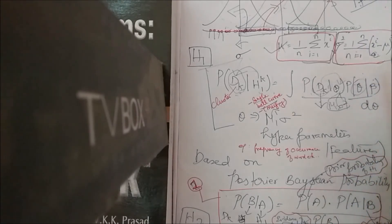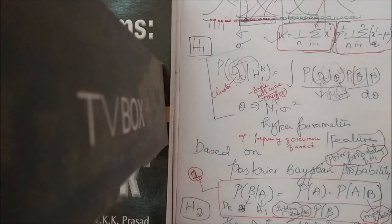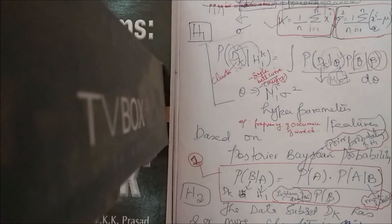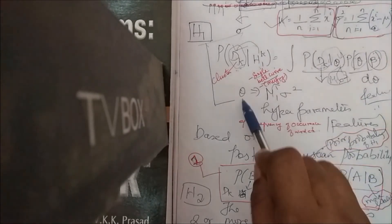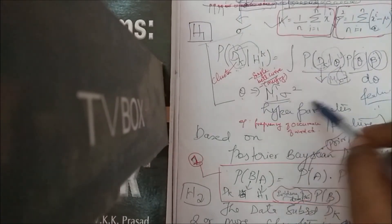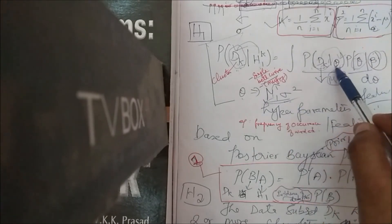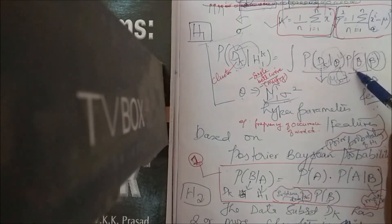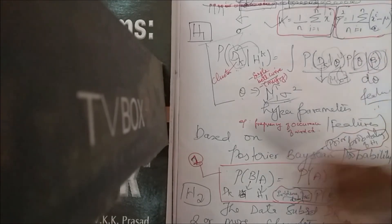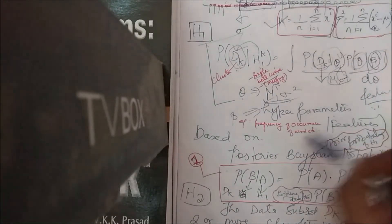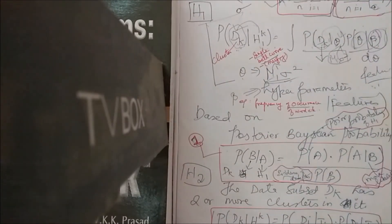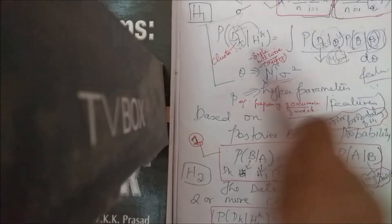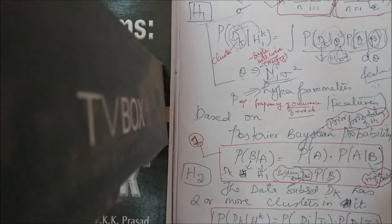Beta (β) represents the features of the hyper-parameters — the hyper-parameters for θ. In other words, μ and σ² are the parameter features for dk, but for deciding θ we use β, which represents hyper-parameters such as the frequency or occurrence of a word. This is the formula used to find H1, telling us whether dk can be formed.